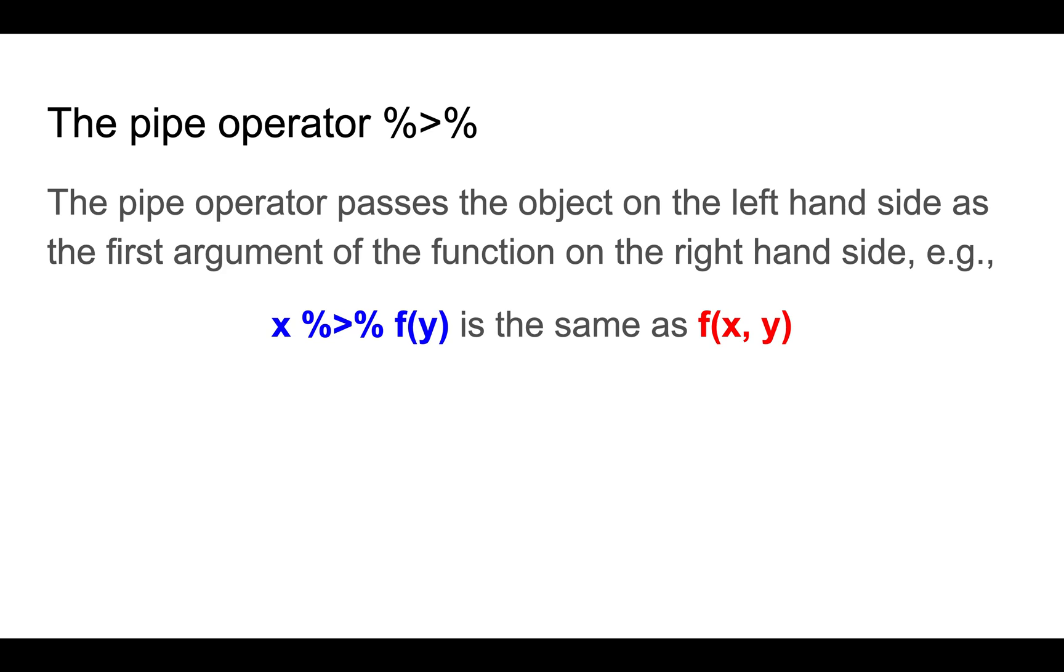And now we're going to talk about something a little bit more tricky, which is the pipe operator, which is percentage greater than percentage. Basically, the pipe operator is a kind of shorthand, a way to write code that is more compact and easier to read. The pipe operator passes the object on the left-hand side as the first argument of the function on the right-hand side. For example, if you want to write f(x, y), you could instead write x pipe f(y).